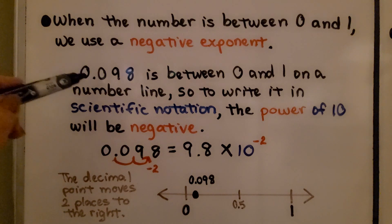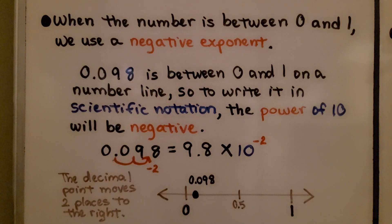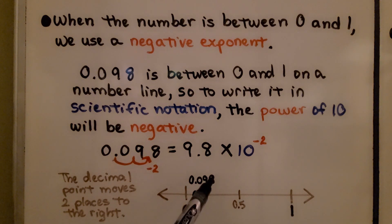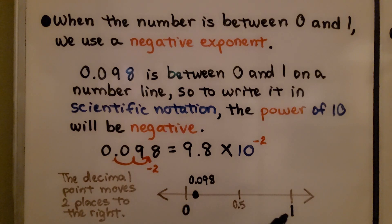We have 0.098. It's between 0 and 1 on a number line — here's 0, here's 1. This is about 1 one-hundredth. It would be about right here on the number line, so it is greater than 0 and less than 1. So to write it in scientific notation, the power of 10 will be negative.